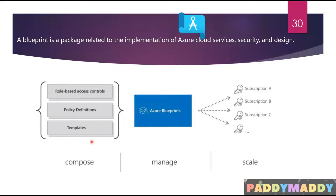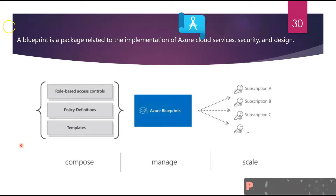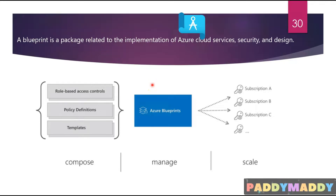As a next step, let's understand how Azure Blueprints differ from Azure Policy, since we've been covering these topics within this module. Keep in mind that Azure Policy is a default-allow system that focuses on resource properties during deployment for already existing resources. It supports cloud governance by validating that resources within the subscription adhere to requirements and standards.